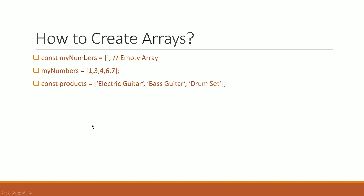Now if you want to use products or variables, you can use the square brackets. If you need to use the square brackets, you can use the electric guitar. You can use the element to separate items — for example, base guitar, drum set. My number is an empty array. My number is 1, 3, 4, 6, 7. My number is constant products.